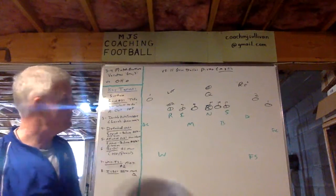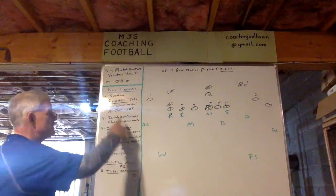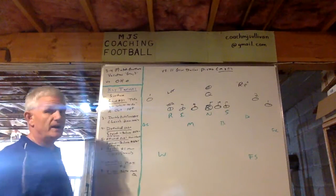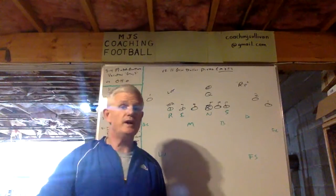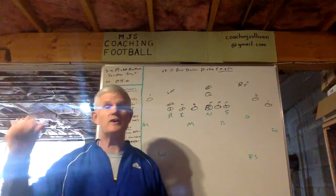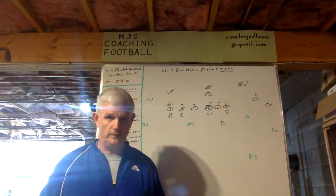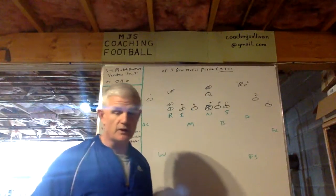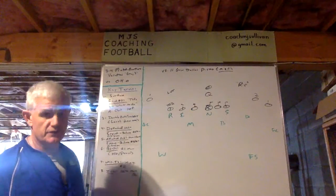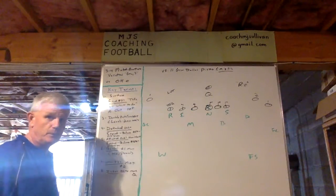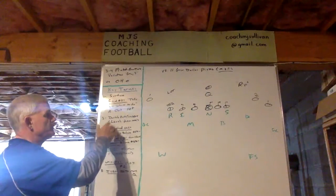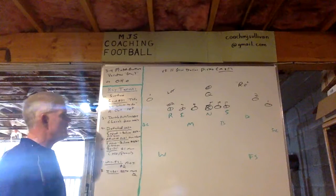Number two tells you what to do. In this case, number two is running an out at 10 or more yards — a deep out. It starts off as a vertical and then busts out, so we'll show you how we compensate for that.